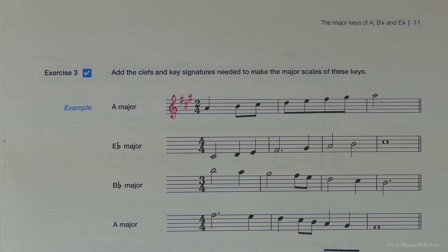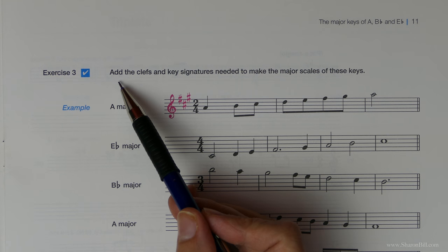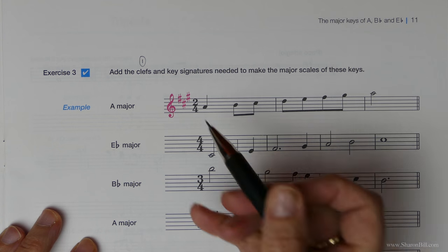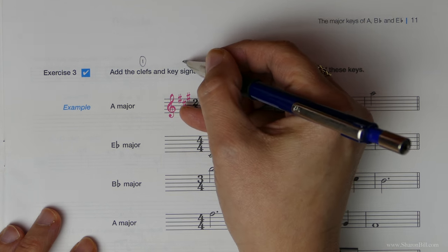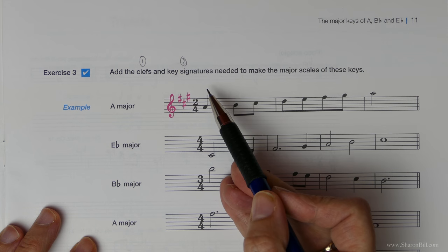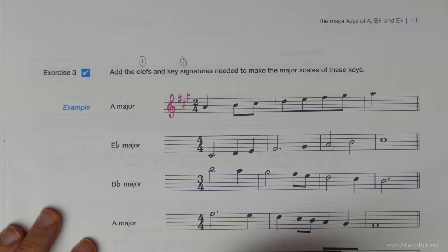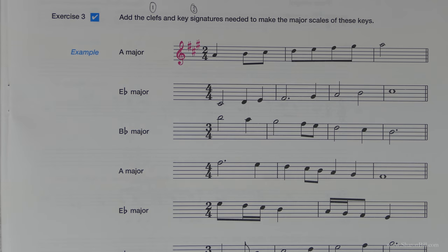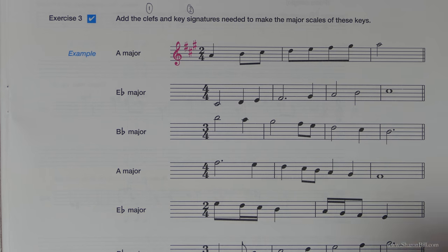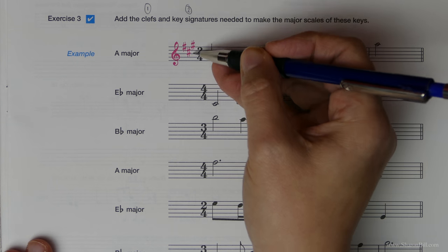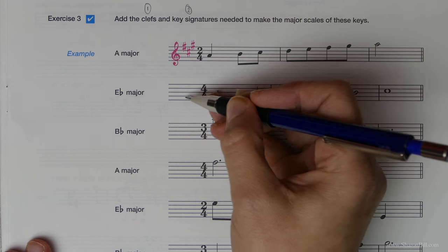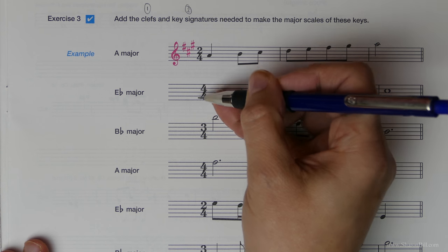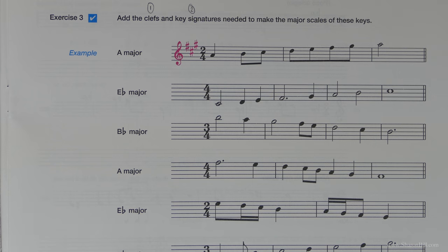Let's look at exercise 3. It asks us to add the clef - that's part 1 of the question - and then part 2 is to add the key signature needed to make each of these major scales correct. So we need to add a clef and a key signature. You need to have a sharp pencil to hand especially when writing key signatures, as there's not a great deal of room.